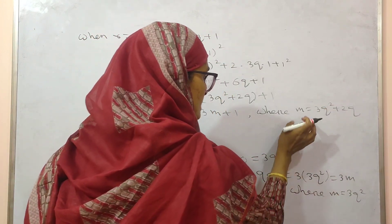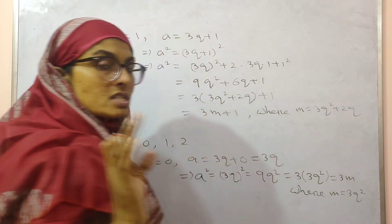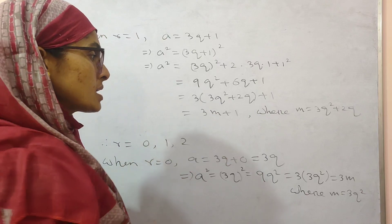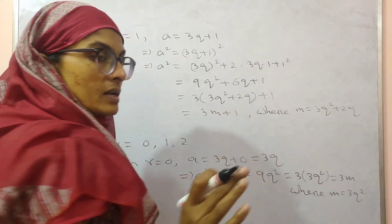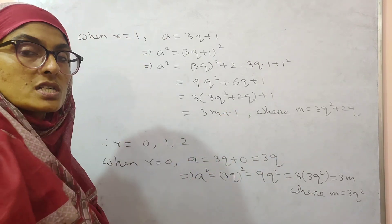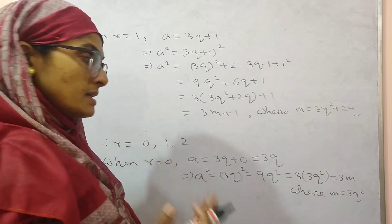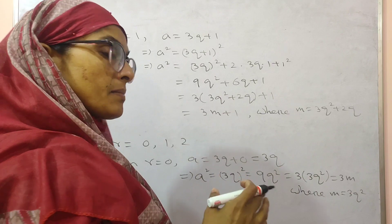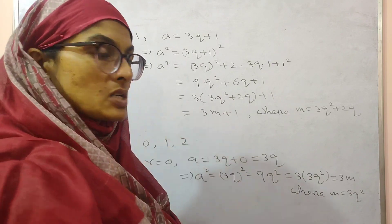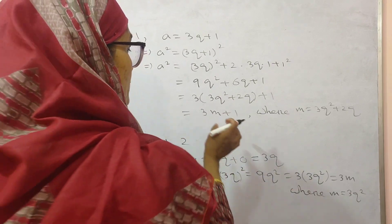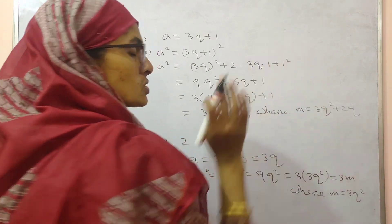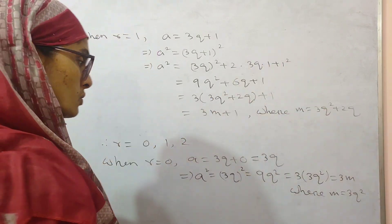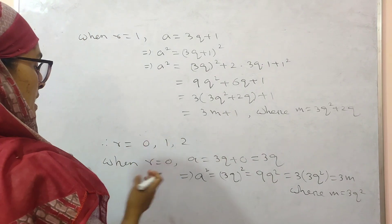Remember that this M and the previous M are not the same — they are different. In your question it is given: either of the form 3M or 3M plus 1. So I have written M equal to 3q squared plus 2q. Again, you have to put r equal to 2.